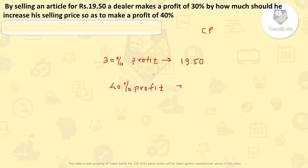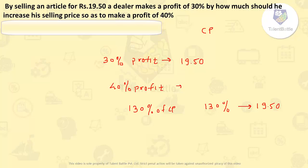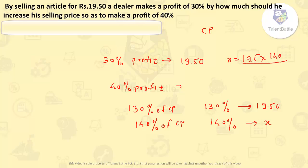Rather than putting any formula, just use logic. 30% profit means he gets 30% extra on cost price, so selling at 30% profit means he is selling at 130% of cost price. So 130% of cost price = 19.50 rupees. For 40% profit he has to sell at 140% of cost price. Considering that as X: for 130 it is 19.50, then for 140 it is X. So X = 19.5 × 140 ÷ 130.